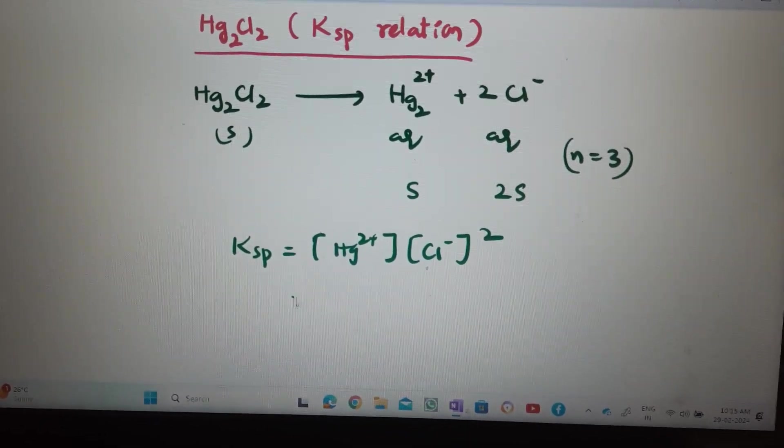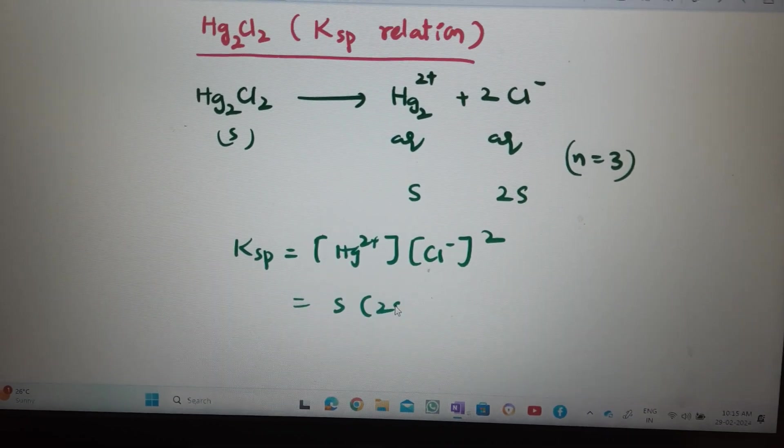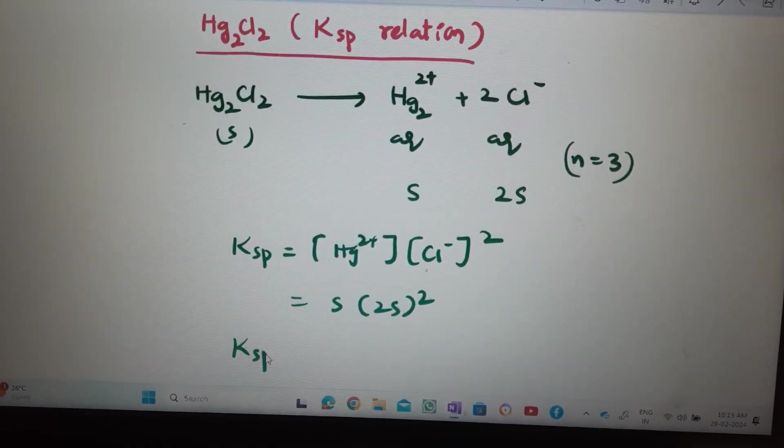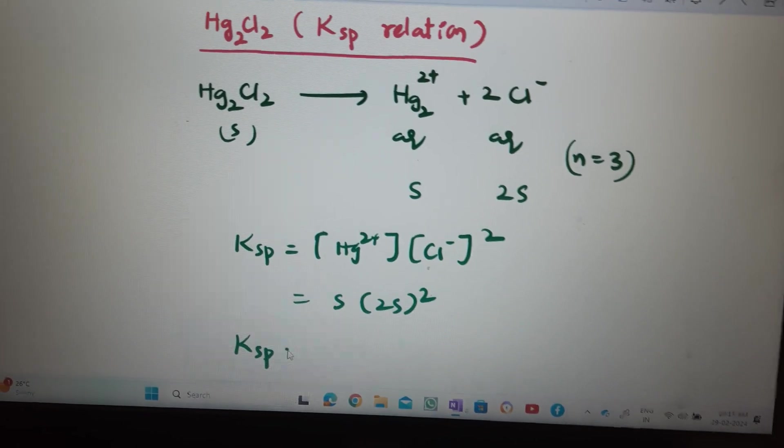That is, S into 2S whole square, which is nothing but Ksp equals 4S³.